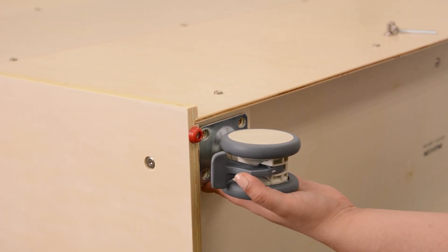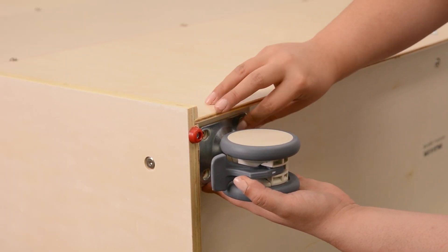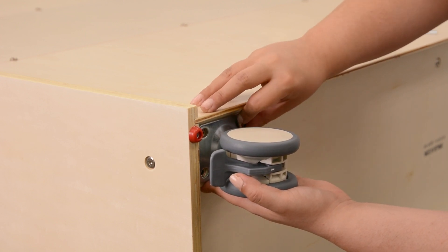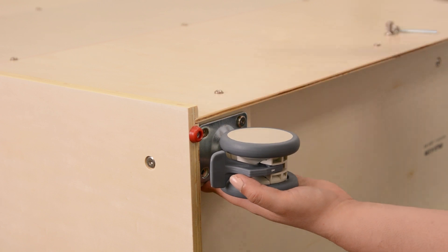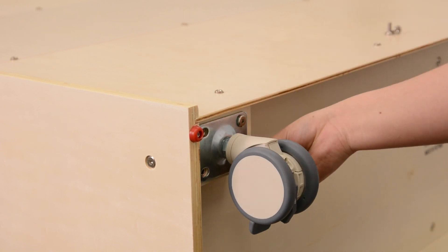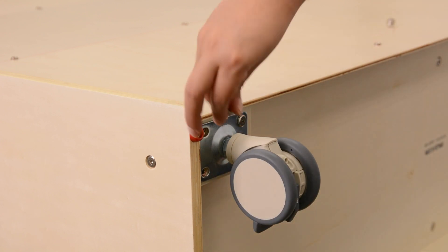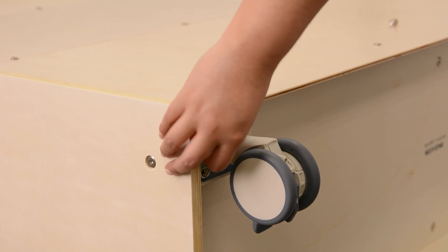This unit comes with optional casters to make the locker mobile. Easily attach casters with 4 respective screws per caster. This unit also comes with an anti-tipping kit for added safety if you opt not to use the casters.